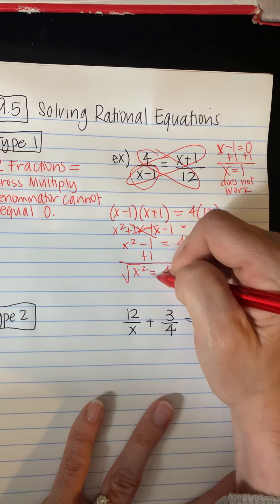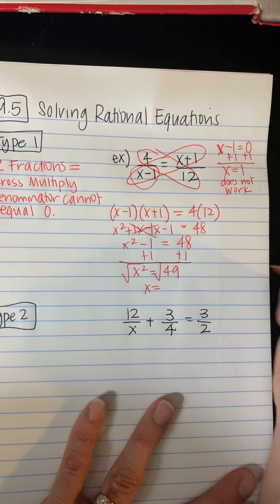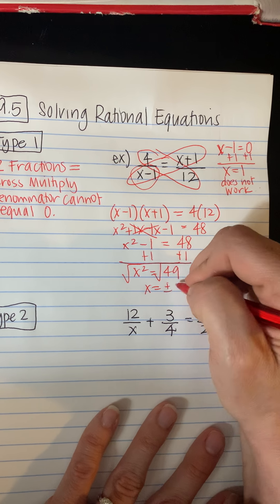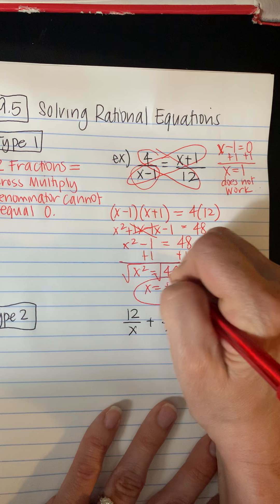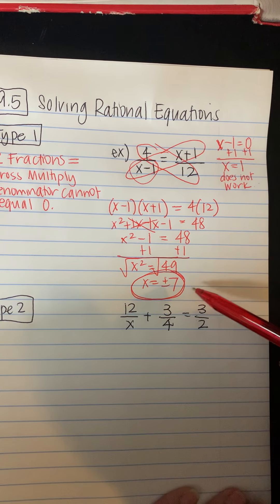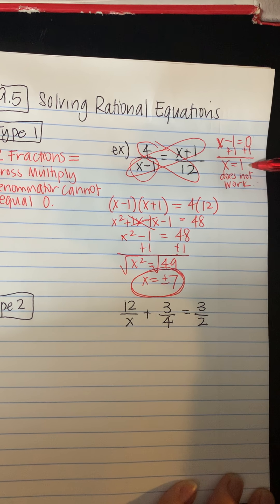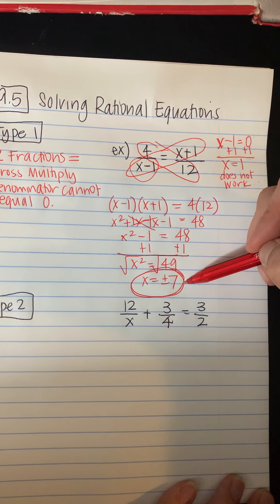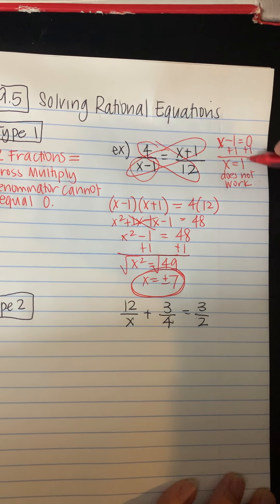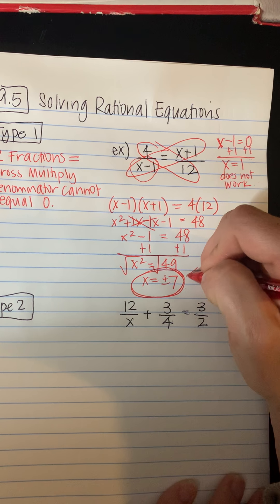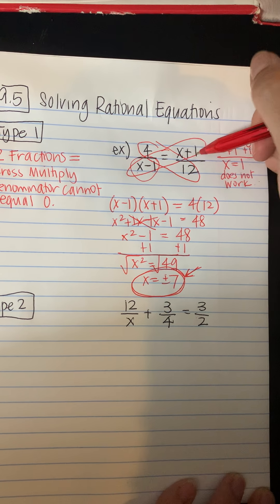And then this will be 48. So I'm ready to solve. And I go to take the square root. Don't forget, though, when we put the square root in, there's always two answers, positive and negative. Square root of 49 is positive and negative 7. So these are the answers that work. Back up here, remember, x equals 1 does not work. Well, x equals 1 doesn't come up as a solution, so we don't really need this. But these are our two answers that would work for this problem.